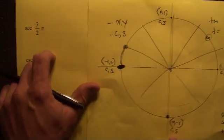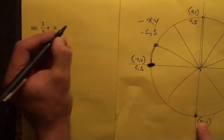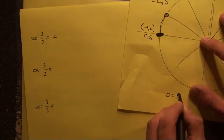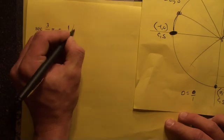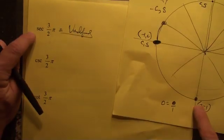Secant. Secant is inverse of cosine. What's inverse of 0? Well, if you invert 0, think about it. What's 0? It's 0 divided by something. Let's put it over 1. Well, if you inverse 0, where's the 0 going to be? Denominator, which means undefined. Secant is undefined at this spot.